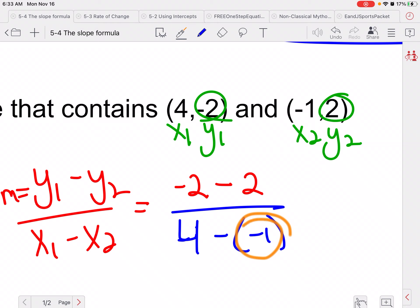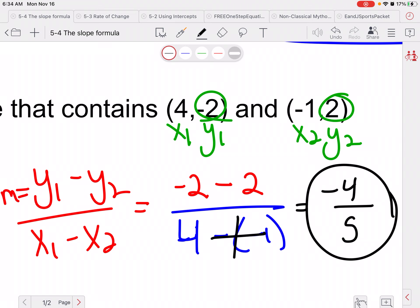Now notice I put that negative 1 in parentheses when I plugged in, because there is a minus here, which is here, and then the negative 1 is coming from there. So please, please, please make sure you're watching those signs. Negative 2 minus 2 is negative 4. This becomes a big plus sign, so I get a positive 5. So my slope is negative 4 fifths.